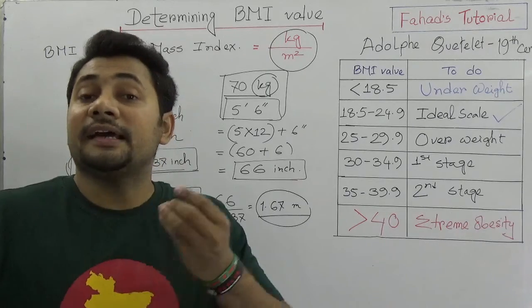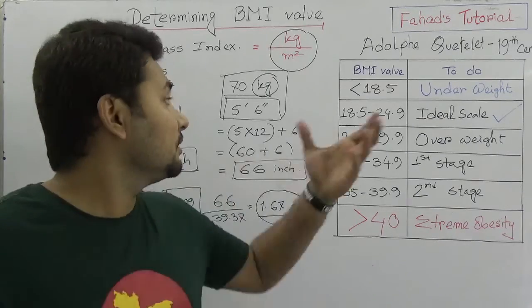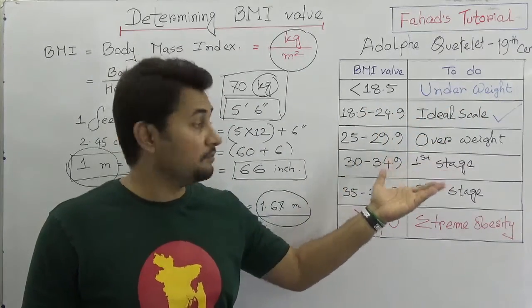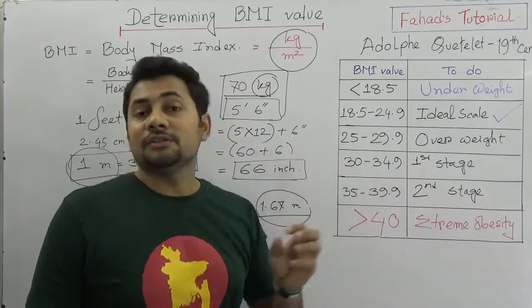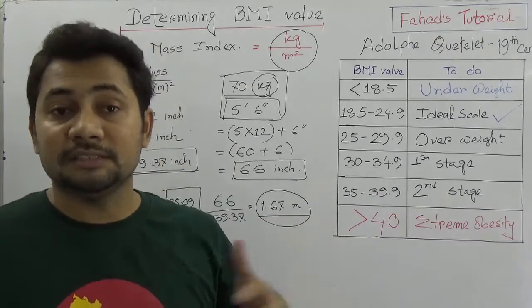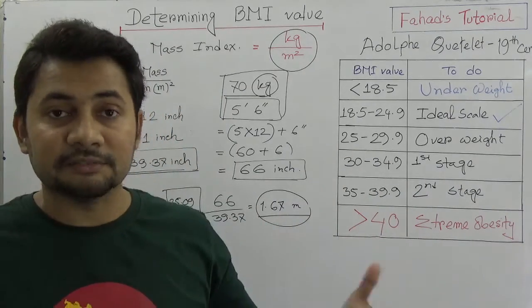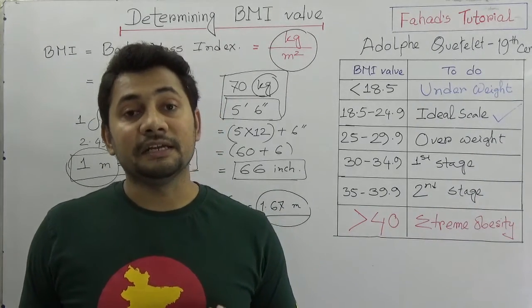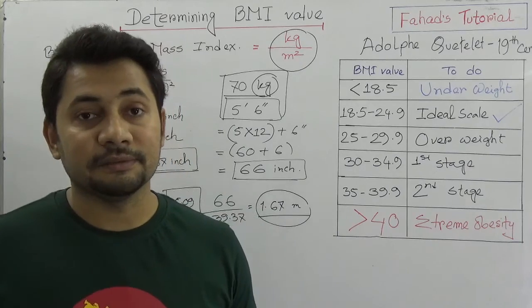Your cousins, so that they can have an idea that how their health is like underweight or standard scale or overweight or first stage or second stage. So if you find somebody's BMI is more than 40, it means that this person is extremely obese and that person needs actually the health advisory from the medical doctors.